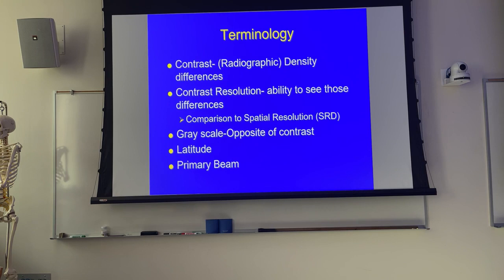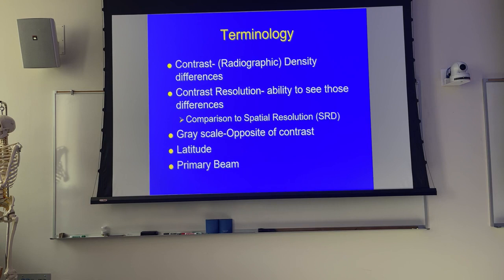You may have heard of virtual grids — we'll talk about what a virtual grid is when we get to it. Contrast resolution is the ability to see differences in tissue types: bone versus soft tissue, or different soft tissue types such as kidneys versus the rest of the abdominal soft tissue. Grayscale is the opposite of contrast and describes the latitude. If you have a high contrast image, it's very black and white. If you have a low contrast image, it looks milky and dull gray, which would also be high latitude.